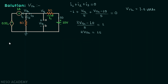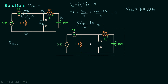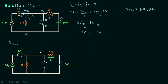We will now move on to the calculation of Thevenin's equivalent resistance Rth, and for this we make some modifications to the network. We turn off all independent sources: the independent current source is replaced with an open circuit, and the independent voltage source is replaced with a short circuit. We then focus on the equivalent resistance Rth seen between the two terminals.